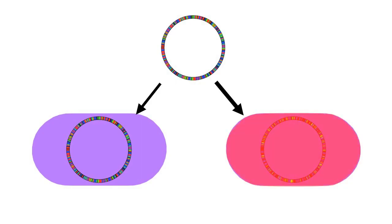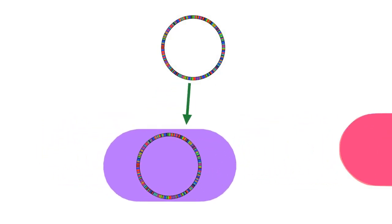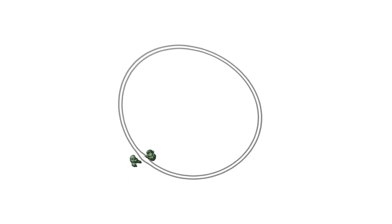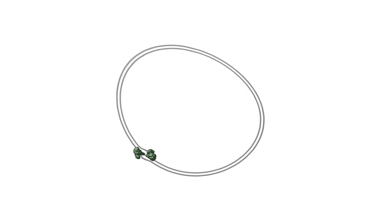Thus, elaborate machinery is used both to assure correct copying and to allow the process to be regulated. Coupling of the two DNA polymerases, one for each strand, allows the process of fork movement to be coordinated.